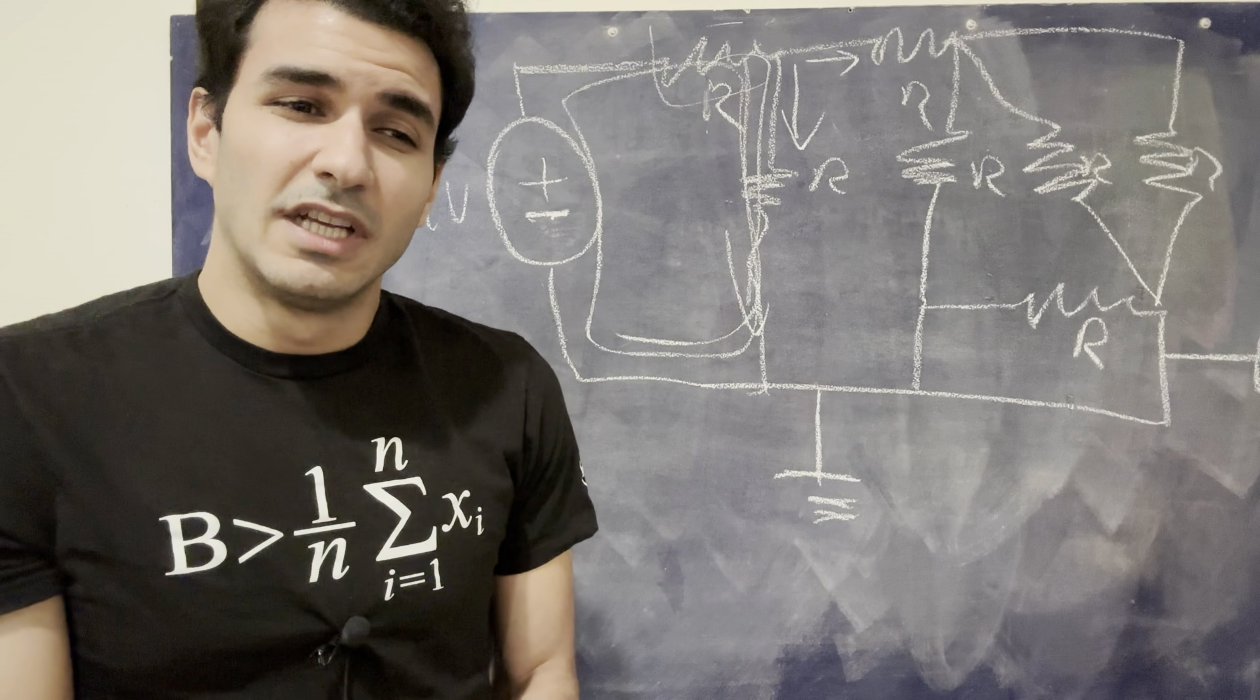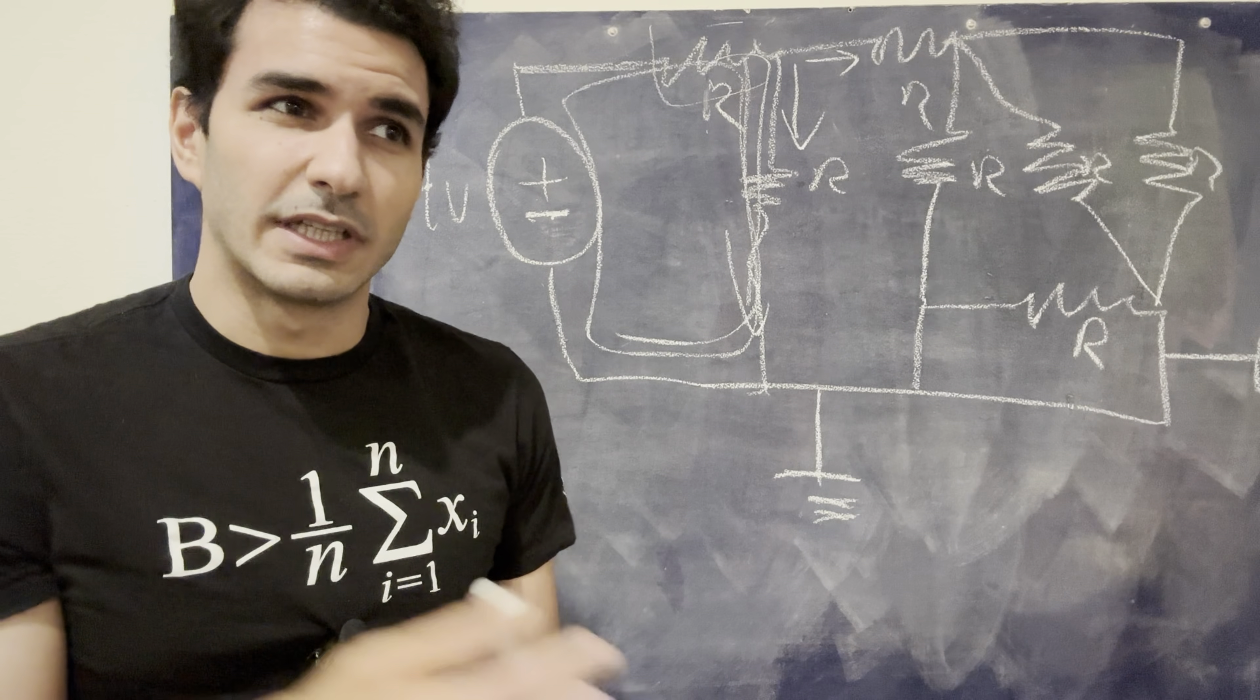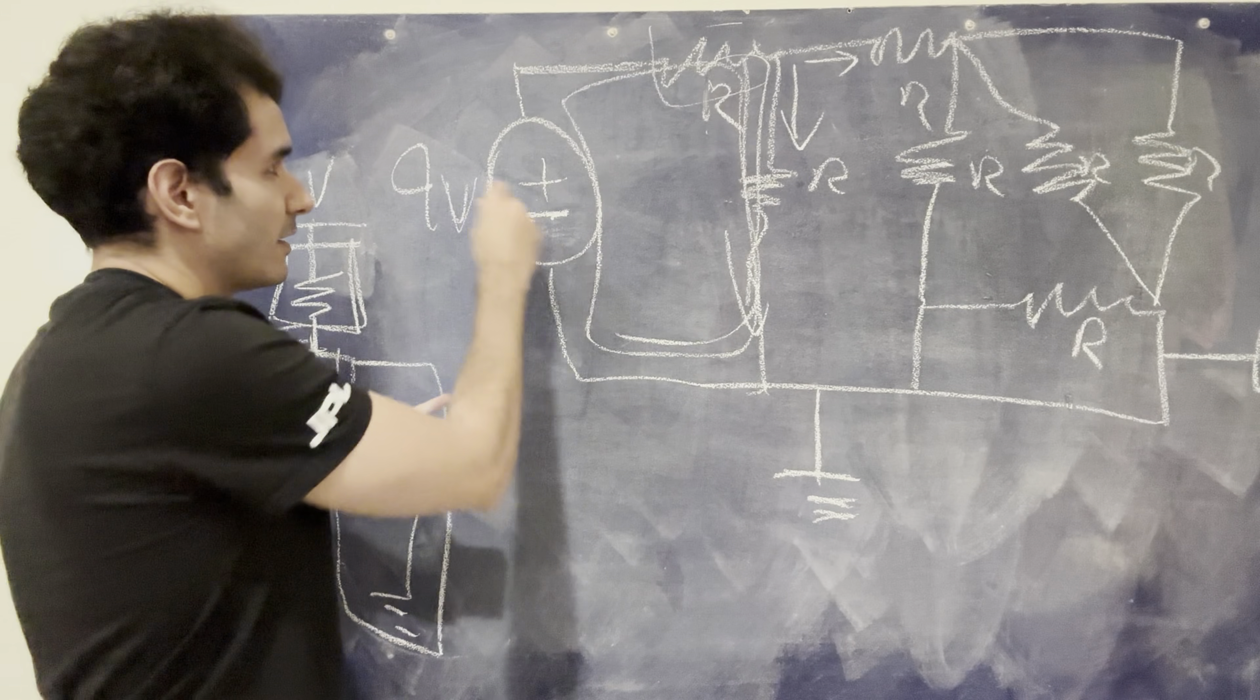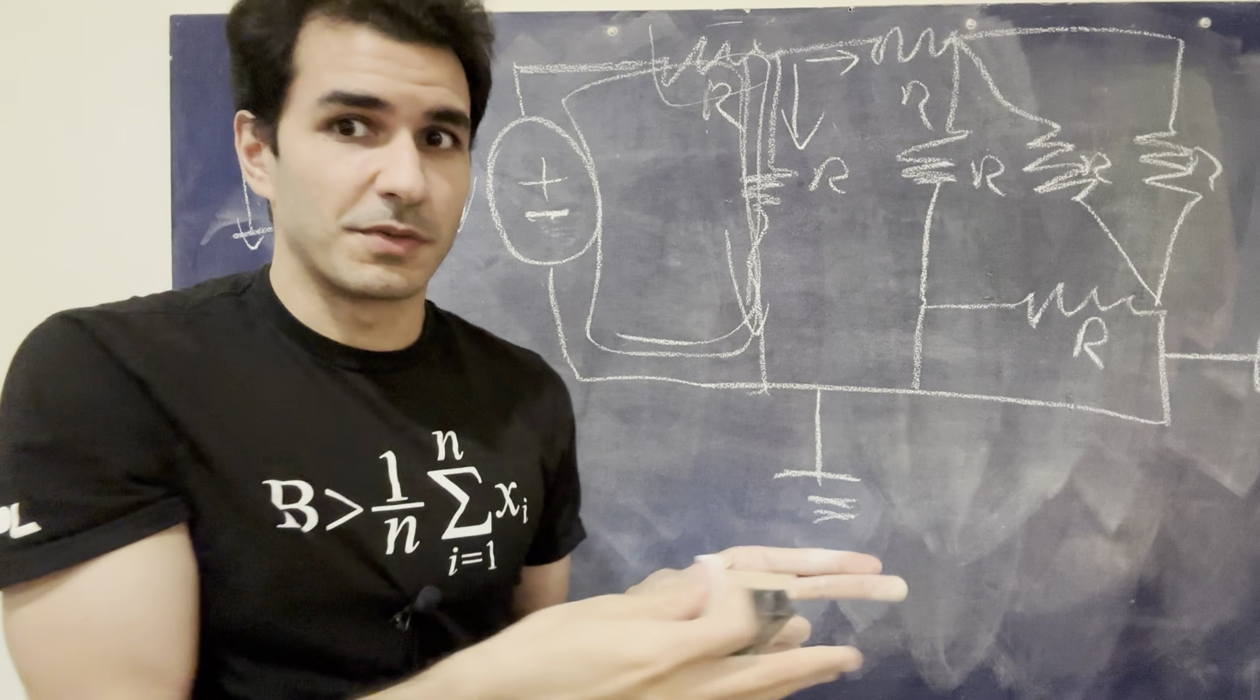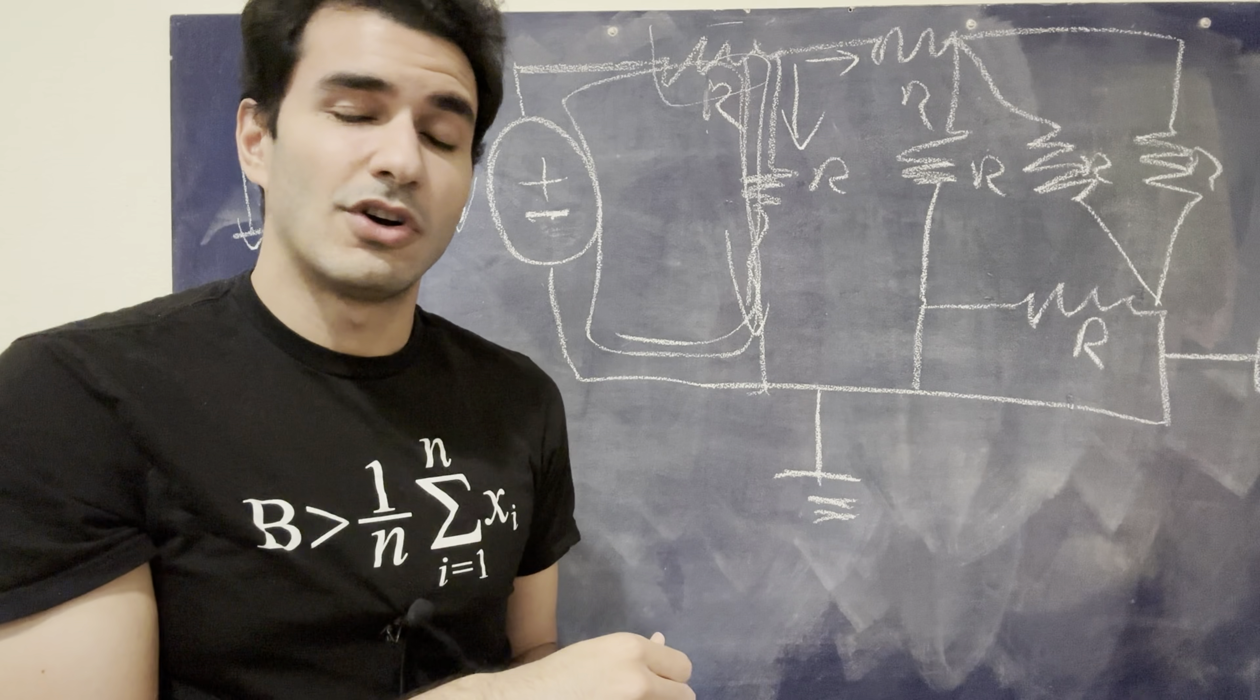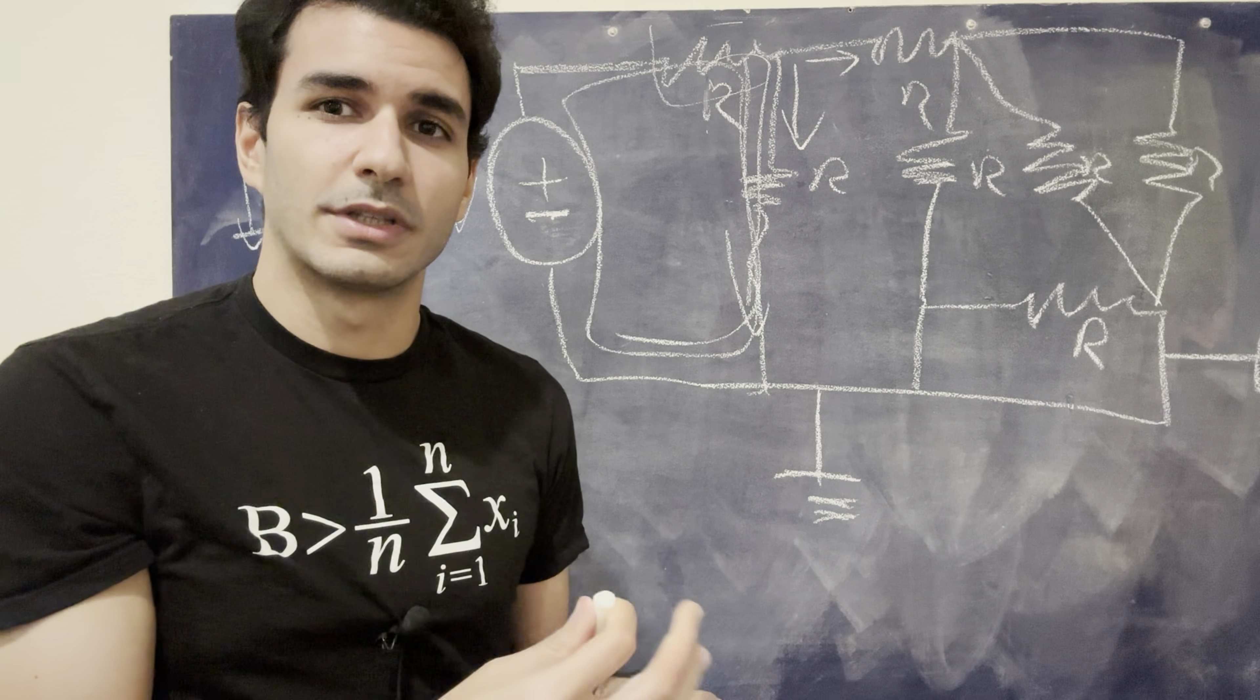And then once you're able to do that, then just have an intuition of, if there's a lot of resistance, assuming the voltage is fixed, wherever there's a lot of resistance, there's going to be less current, because current is the effect, and voltage is the cause, and resistance is something that's slowing down cause.